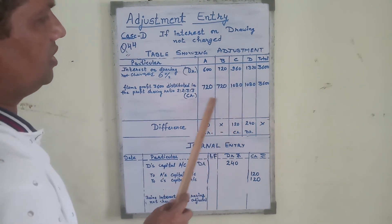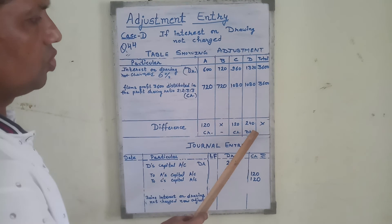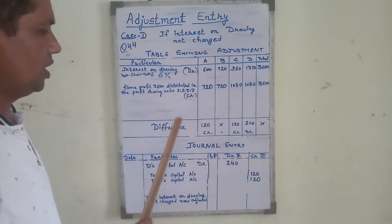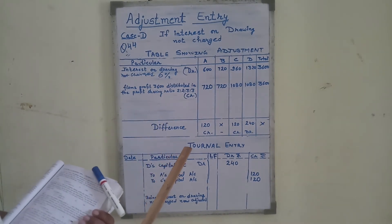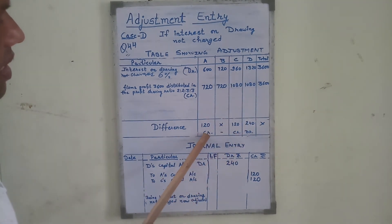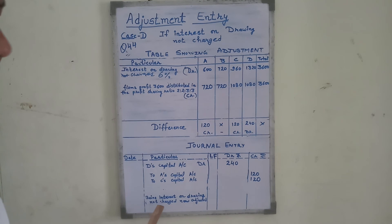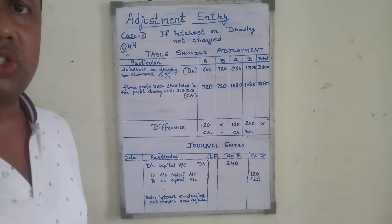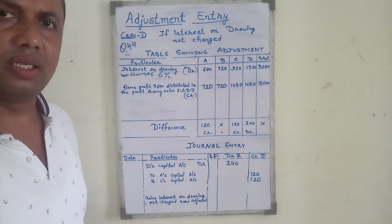This balance is debited. Since capital accounts are not fixed, the adjustment entry is: D's capital account is debited by 240, to A's capital account 120 and C's capital account 120. Narration: being interest on drawings not charged or omitted, now adjusted.